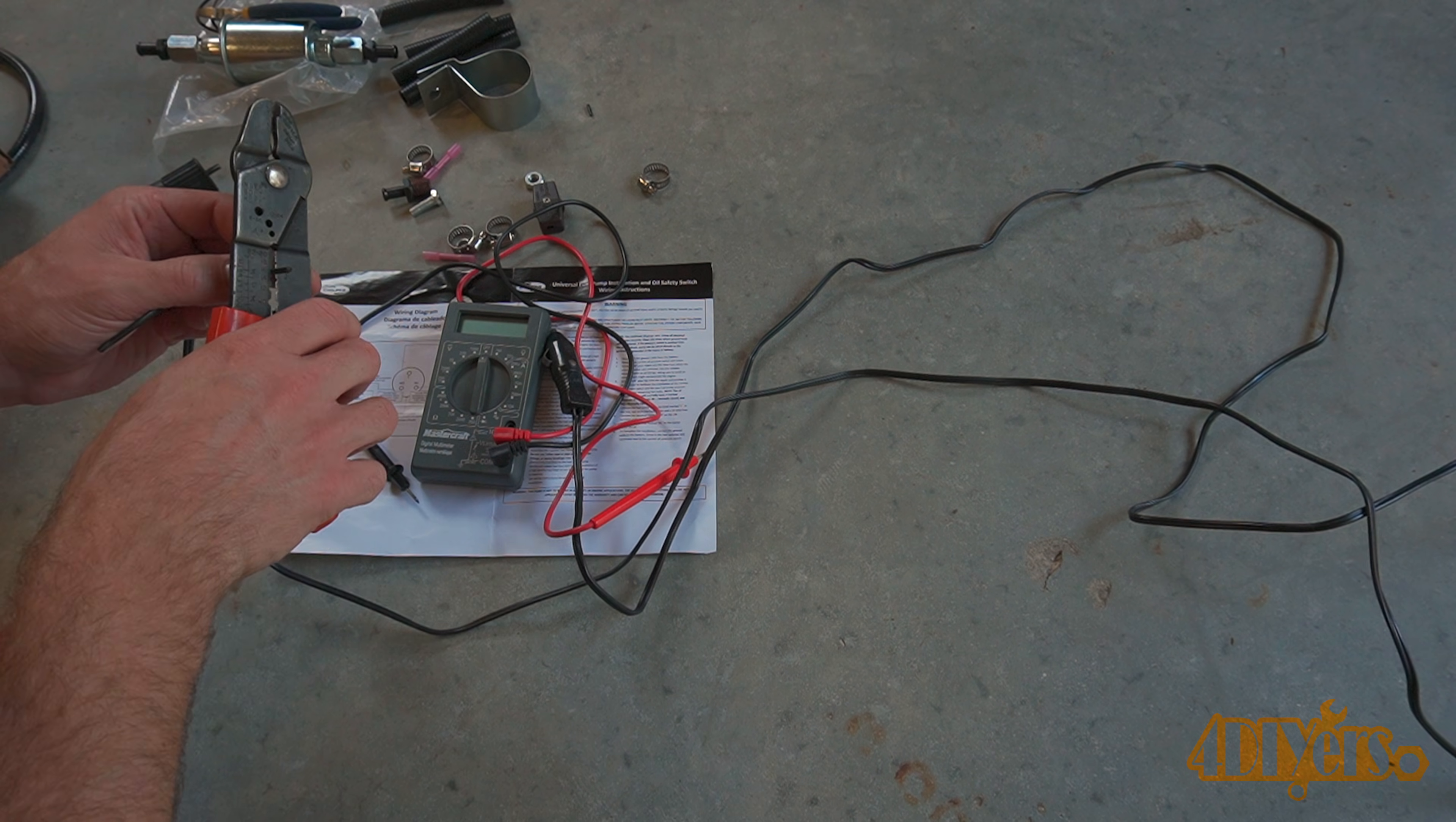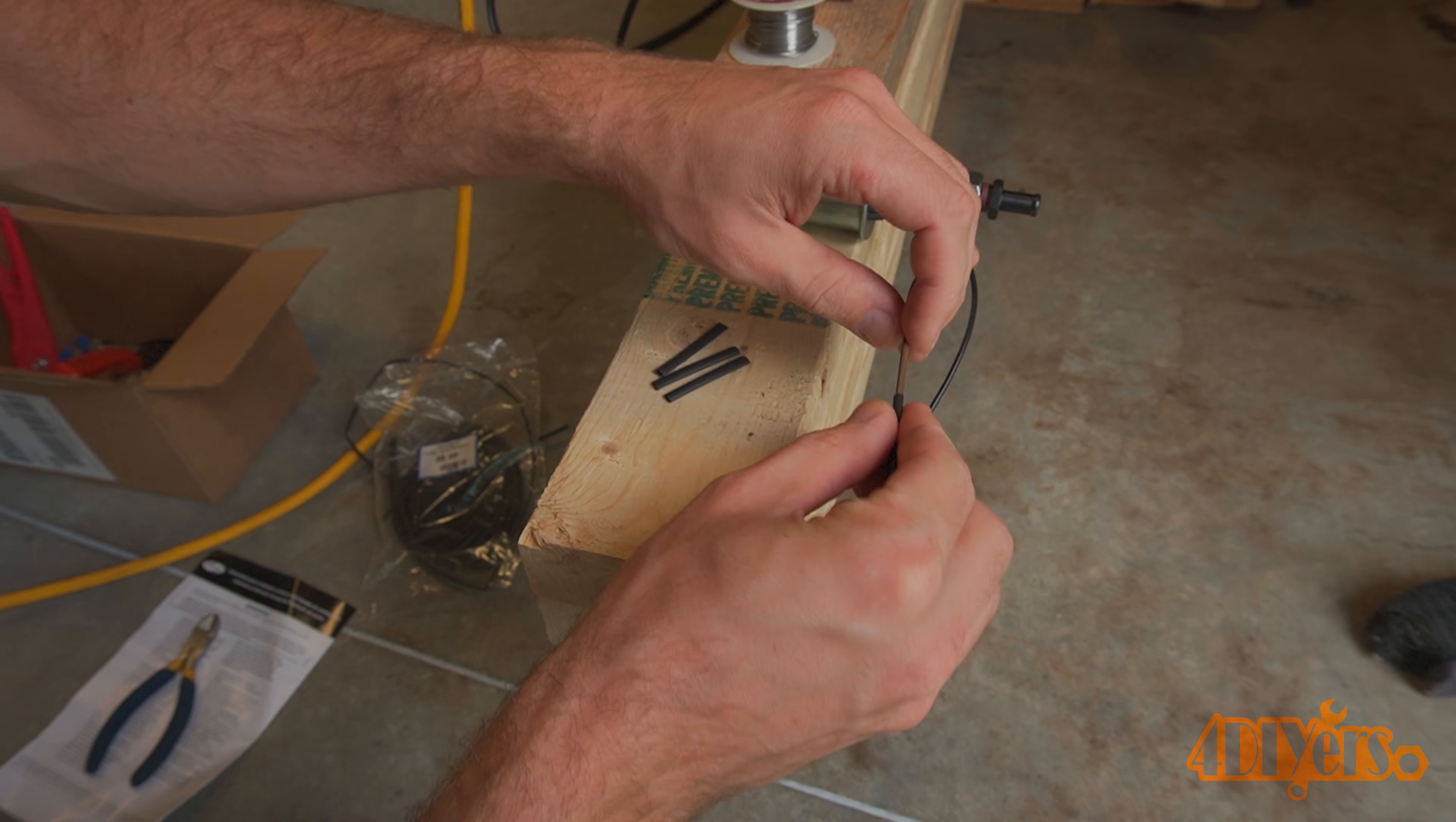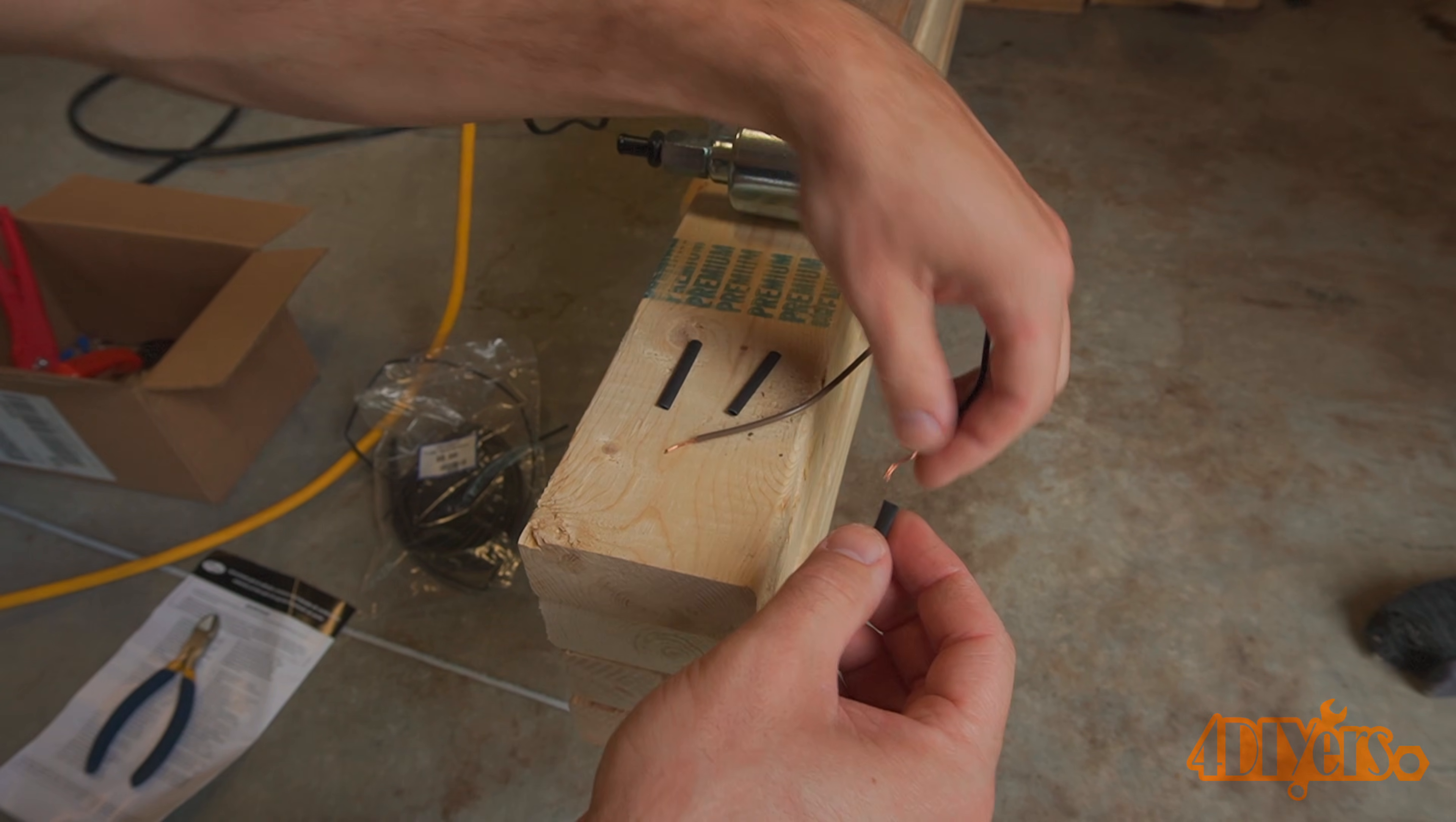Then was stripping back the wires. Heat shrink was then installed onto both the ground and power wires. The wires are then twisted together and soldered.